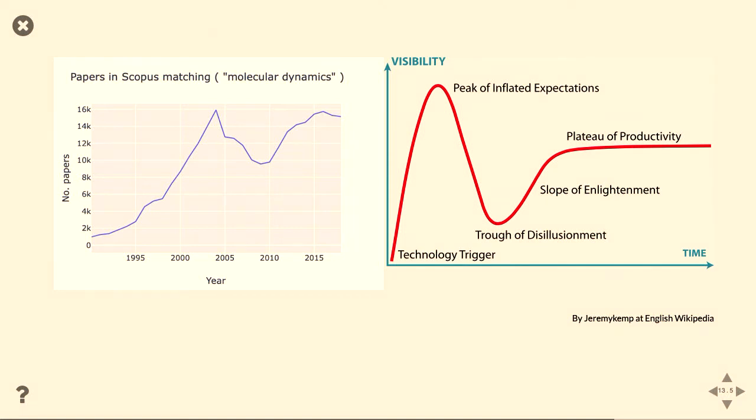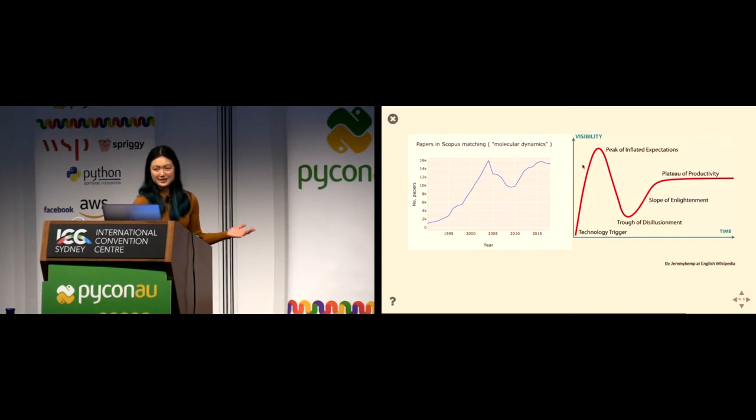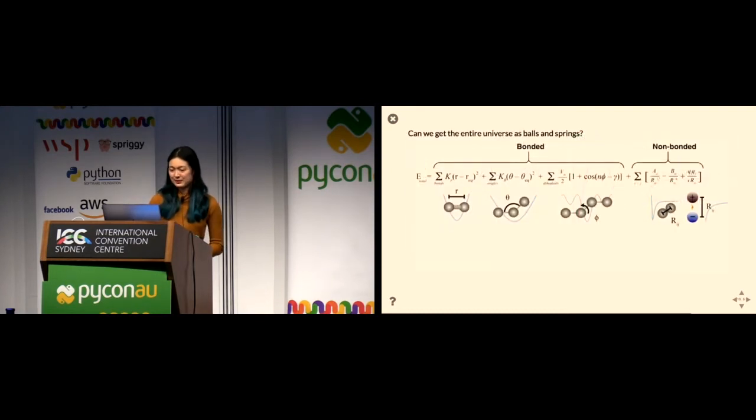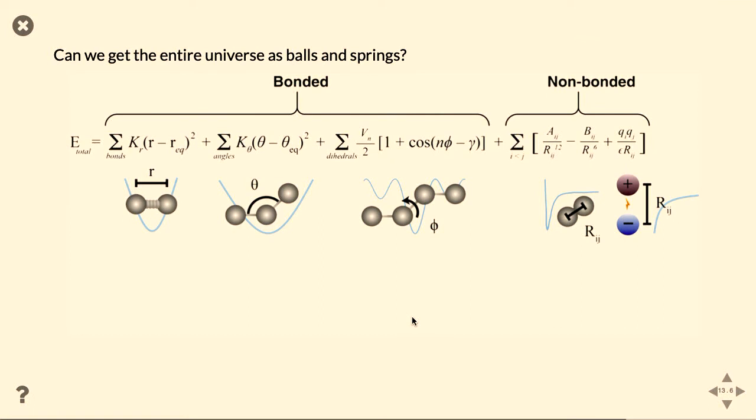And I like this figure, because it looks remarkably similar to the Gartner-Hype cycle. So, that is encouraging. I am hoping that the second peak is not another peak of inflated expectations. We're not going right back up again, but it has become the plateau of productivity, but I guess we'll just have to see.